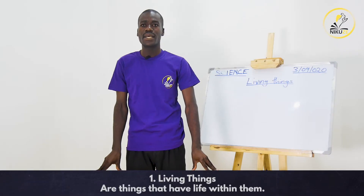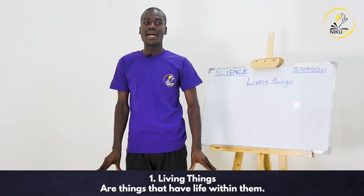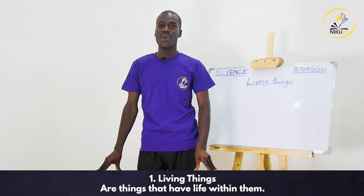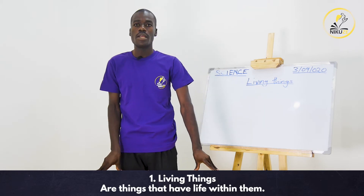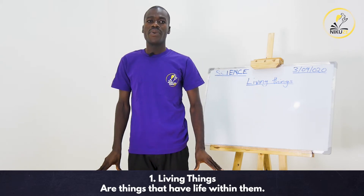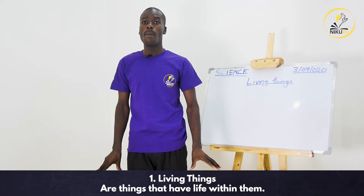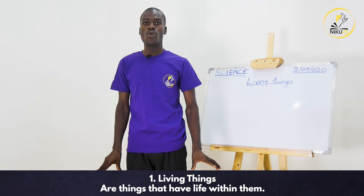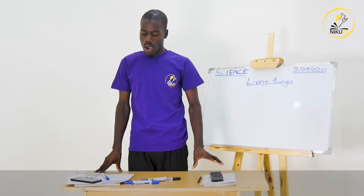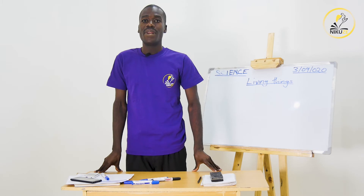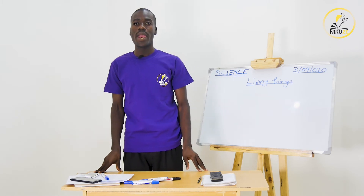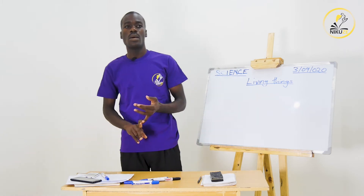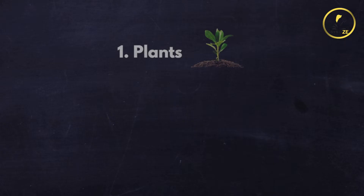Number one: what are living things? Living things are things that have life within them. It means that within their body they have blood and water, and they are able to grow. Examples of living things: number one, we have plants; number two,